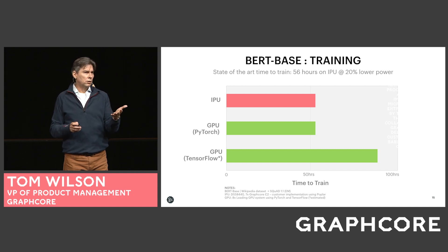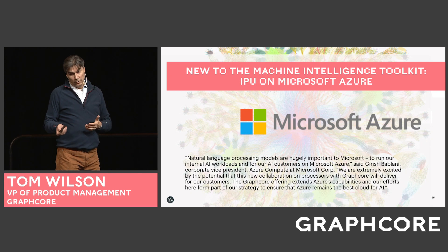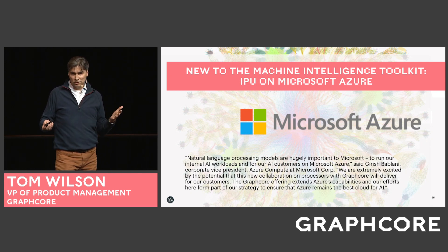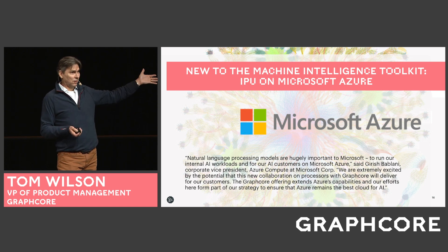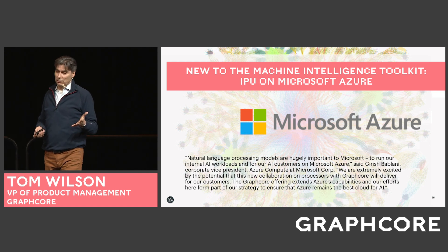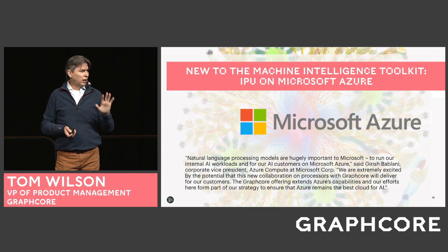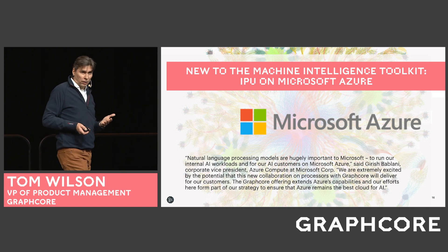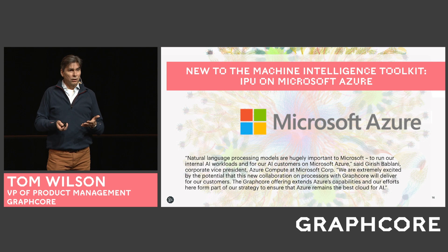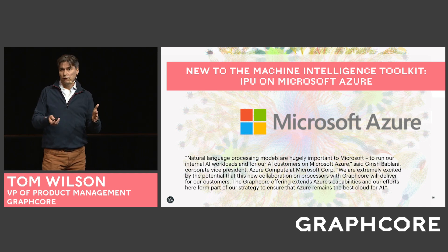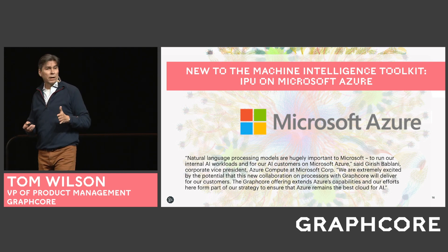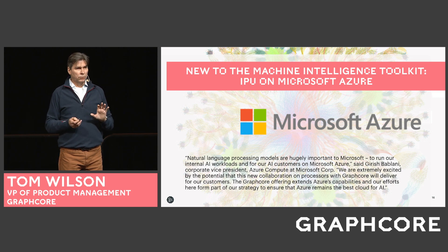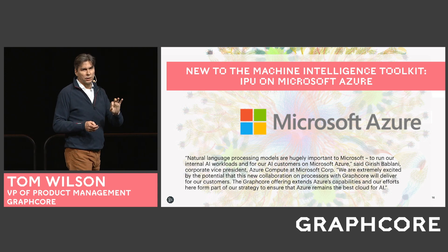One of the ways you can begin to explore these new approaches is on Microsoft Azure. At SC19, we announced the availability of the IPU as a new processing architecture for preview on Microsoft Azure. You can contact Microsoft about how to access the IPUs. We also have a partner, Cirascale, who provides access to the Cirascale cloud to make use of those DSS 8440 servers. There are a number of different ways for you to begin to play with the tools — Poplar SDK, easy, flexible code examples all set up for you to explore.